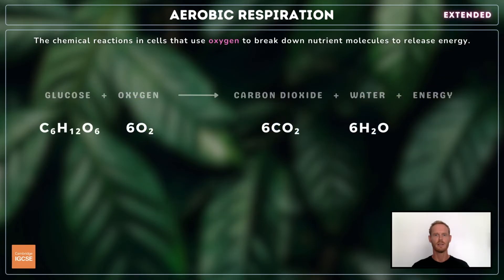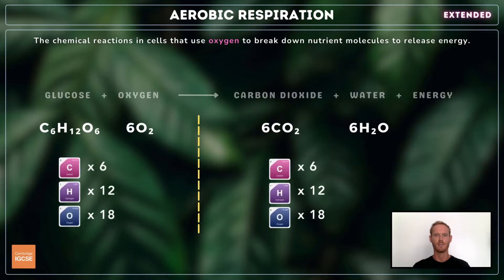For extended, you also need to know the balanced chemical equation for aerobic respiration: C6H12O6 (glucose) + 6O2 (6 oxygen molecules) produces 6CO2 and 6H2O. This equation is balanced as the same elements — carbon, hydrogen and oxygen — are present on both sides and in the same quantities.